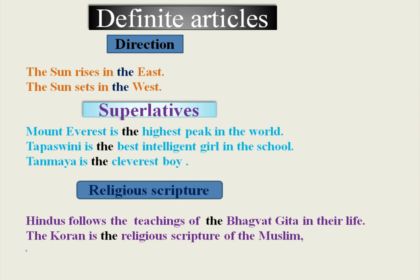We also use the definite article before superlatives. There are three degrees of comparison: positive degree, comparative degree, and superlative degree. For example, 'high' is positive, 'higher' is comparative, and 'highest' is superlative. Adjective words ending in '-est' or beginning with 'most' are treated as superlative degree. 'Mount Everest is the highest peak in the world' — 'highest' is in superlative degree, so we use the definite article.